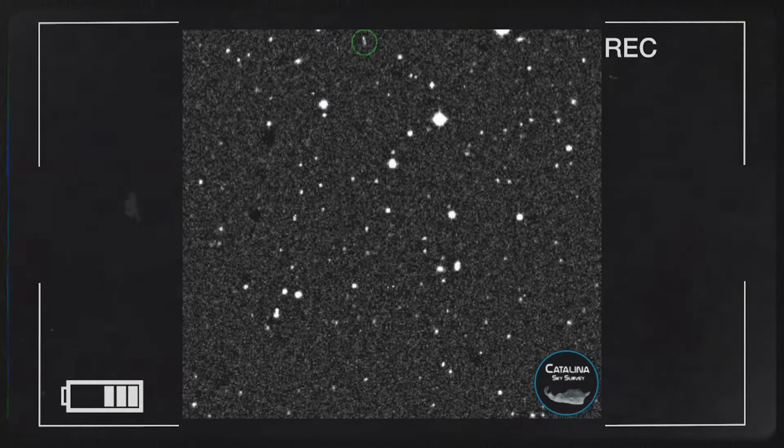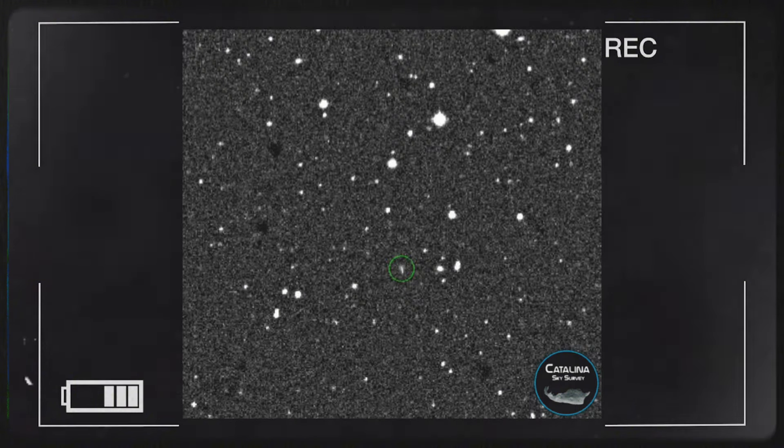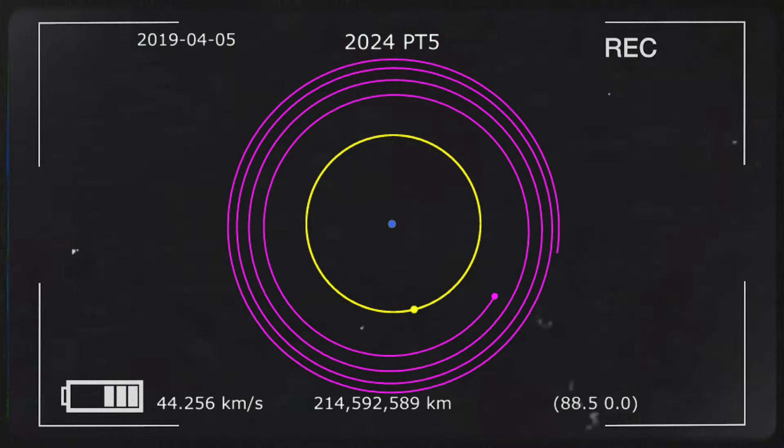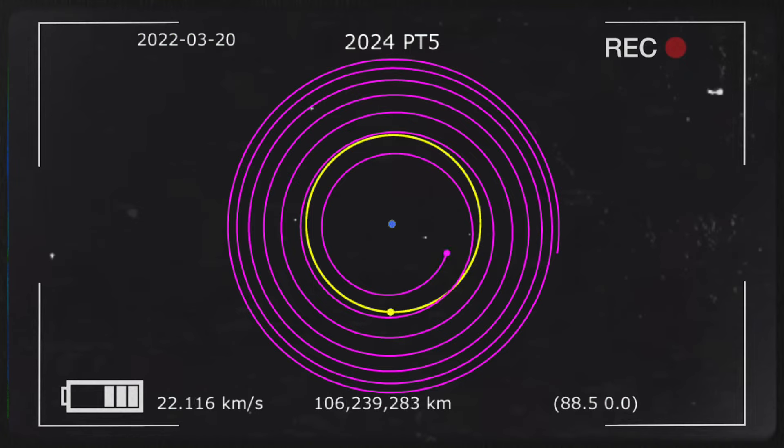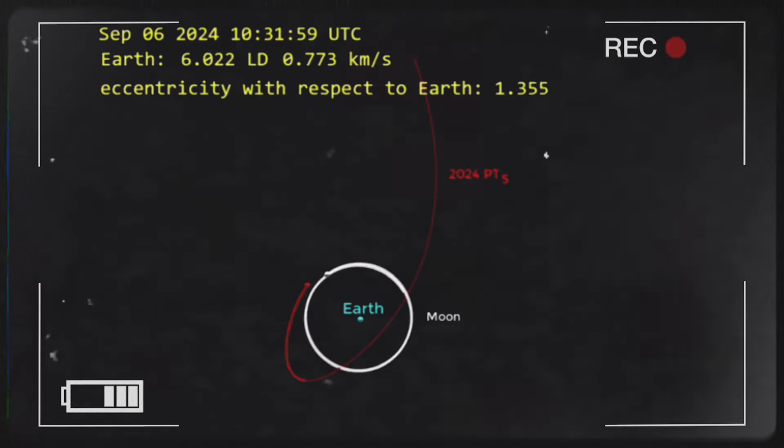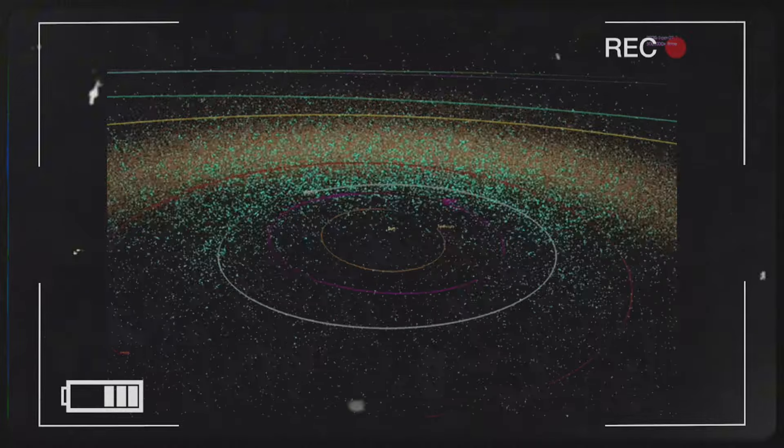This object was about the size of a small car, but at first, scientists weren't sure whether it was a natural asteroid or a piece of space debris. What they did know was that this object, like 2024 PT5, was only a temporary visitor. By June 2007, it had broken free of Earth's gravitational grasp and continued its path toward the Sun. These temporary moons provide a valuable opportunity for scientists to study the dynamics of Earth's gravitational field, as well as the behavior of near-Earth objects. While 2024 PT5 poses no threat to our planet, its brief appearance gives astronomers a chance to further refine their understanding of how asteroids move and interact with Earth.